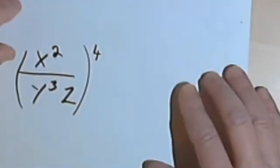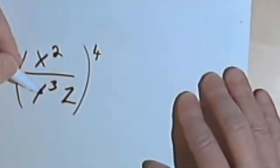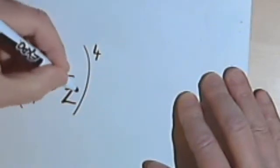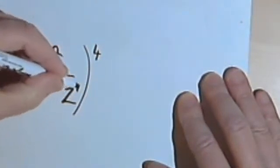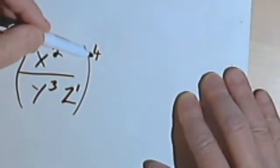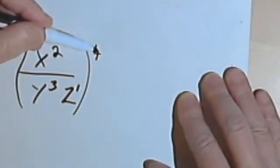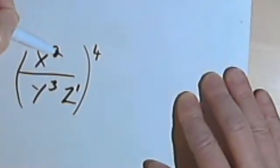The same rule is going to hold true if you have division, if you have a fraction. So first of all, if I don't see an exponent, I'm going to write in a 1, and then I'm going to take this fourth power outside the parentheses and apply it to each of the exponents inside the parentheses.